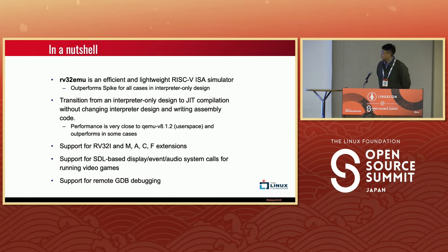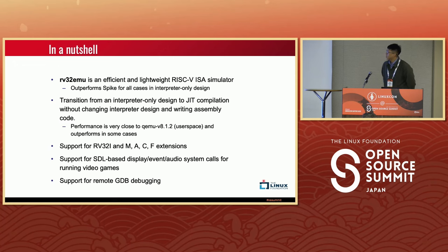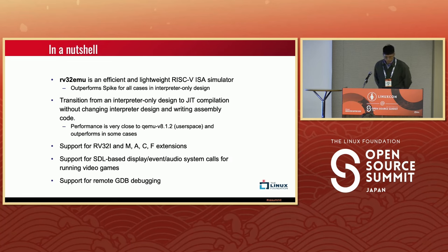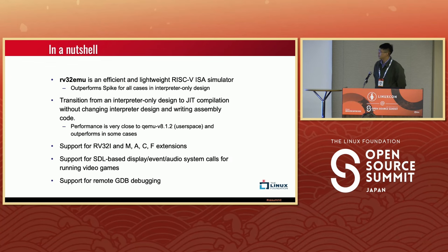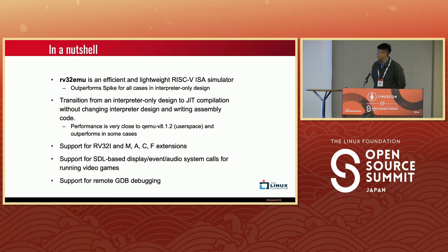This page summarizes our achievements. We chose two popular open-source RISC-V-based simulators for comparison. For interpreter-only design, our comparing target is Spike, and our project RV32EMU outperforms Spike in all cases. For the just-in-time compiler, our comparing target is QEMU. Unlike the dynamic binary translation of QEMU, we don't need to write any assembly code when integrating the JIT compiler, yet our performance is very close to QEMU and even outperforms it in some cases.